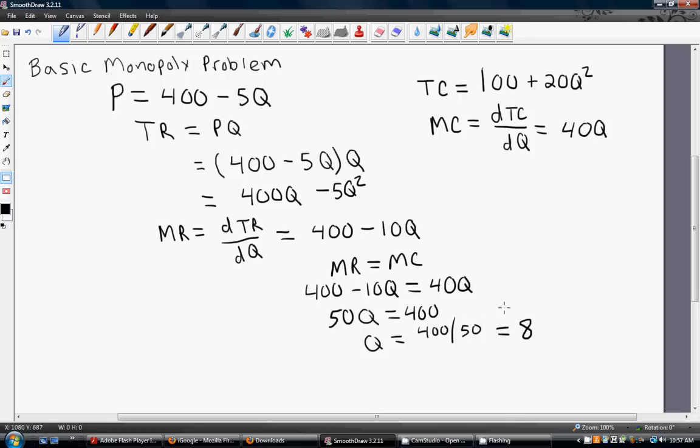So, this profit maximizing monopolist will produce 8 units of output. To find the profit maximizing price, we are going to take this 8 and plug it back into the inverse demand equation. Take this 8, plug it right back here in the inverse demand equation and we will get the profit maximizing price of P equals 400 minus 5 times 8. We will get 400 minus 40 or 360 dollars.